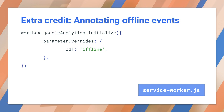One option is to specify the parameter overrides configuration option. This lets you modify the measurement protocol parameters that get sent in the retried request. So even though Google Analytics does not have a built-in dimension for online versus offline interactions, we can create our own dimension for exactly this purpose using a feature called custom dimensions. Once we've created a custom dimension for network connectivity, we can use the parameter overrides to flag replayed requests as offline.